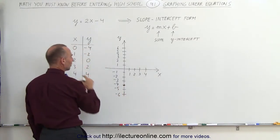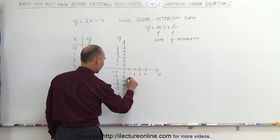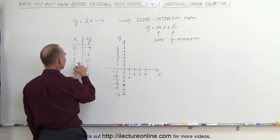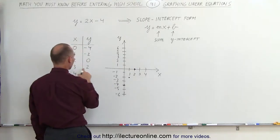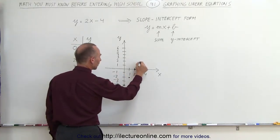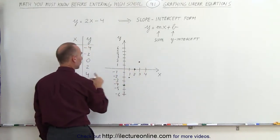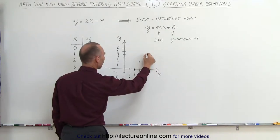When x equals 2, y is 0. When x equals 3, y is 2, right there. And when x equals 4, y is 4. That would be right there.